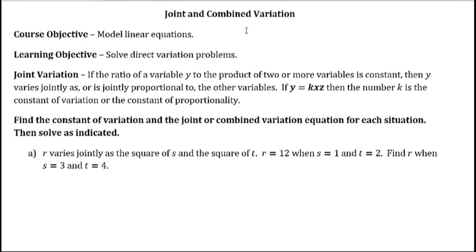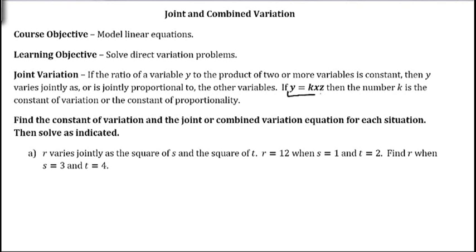This lecture is on joint and combined variation. Joint variation is when some variable Y varies directly as the product of two or more variables. Joint variation is strictly the product of a bunch of variables, so it will have exactly the form Y equals KXZ. There could be other variables as well.